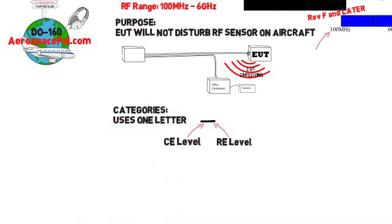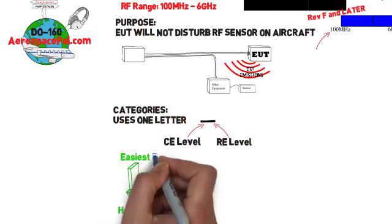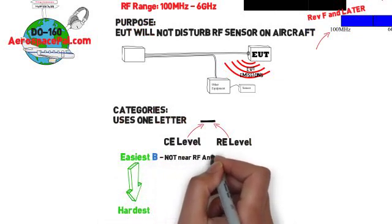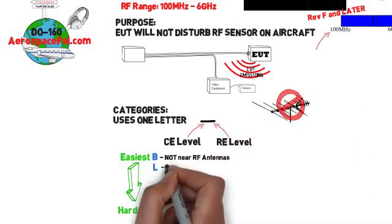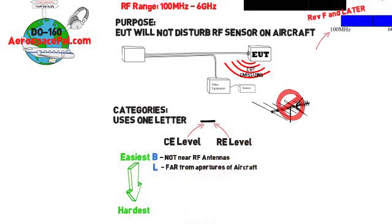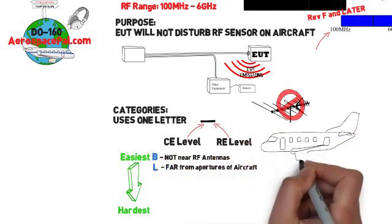Going from least stringent to most stringent, the categories are B: Products that are not near RF antennas or other sensitive equipment. L: Equipment that is far from apertures of the aircraft like windows and far from RF antennas. For example, the electronics bay.